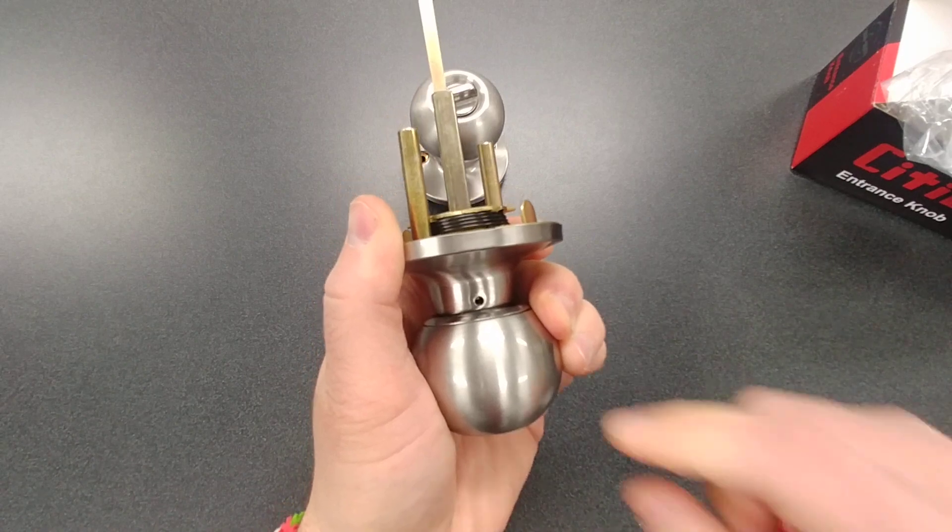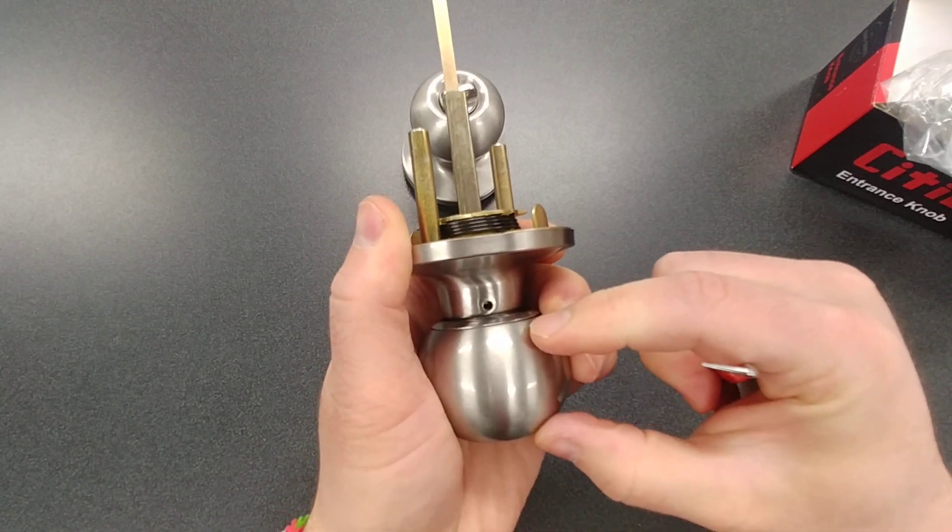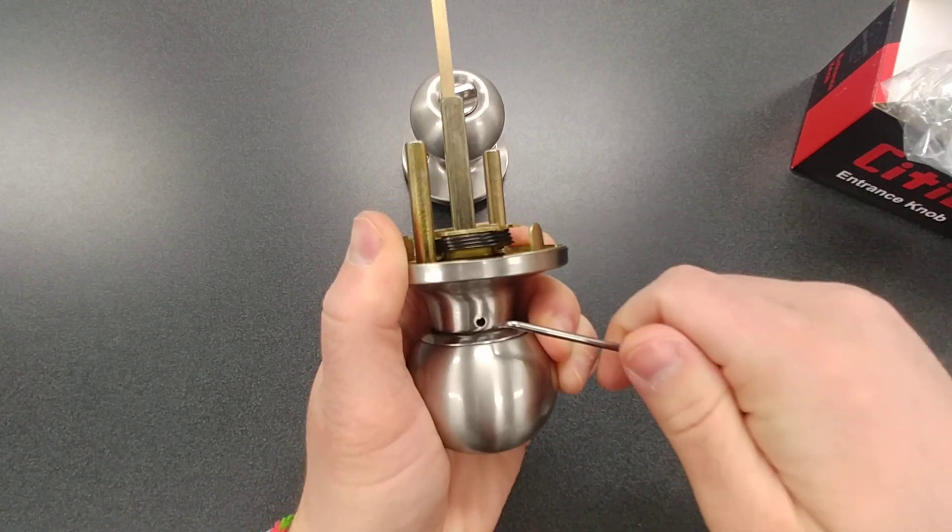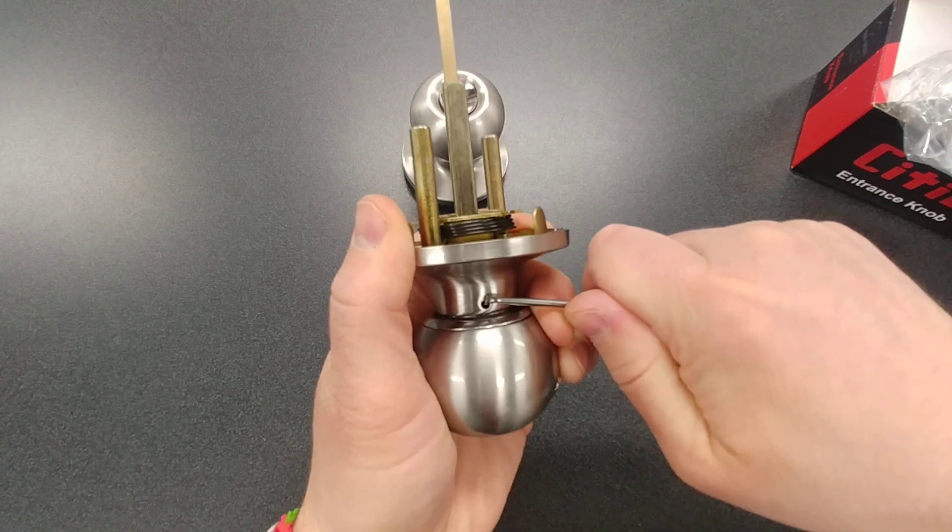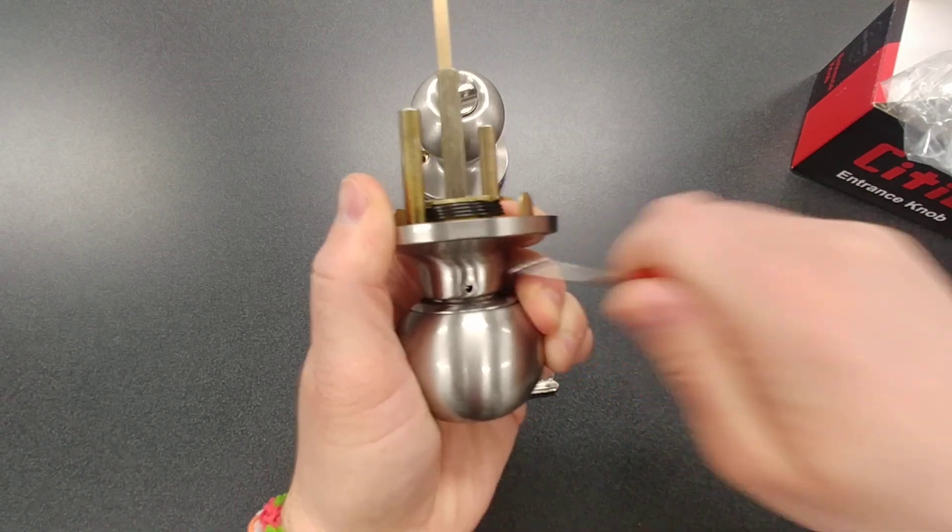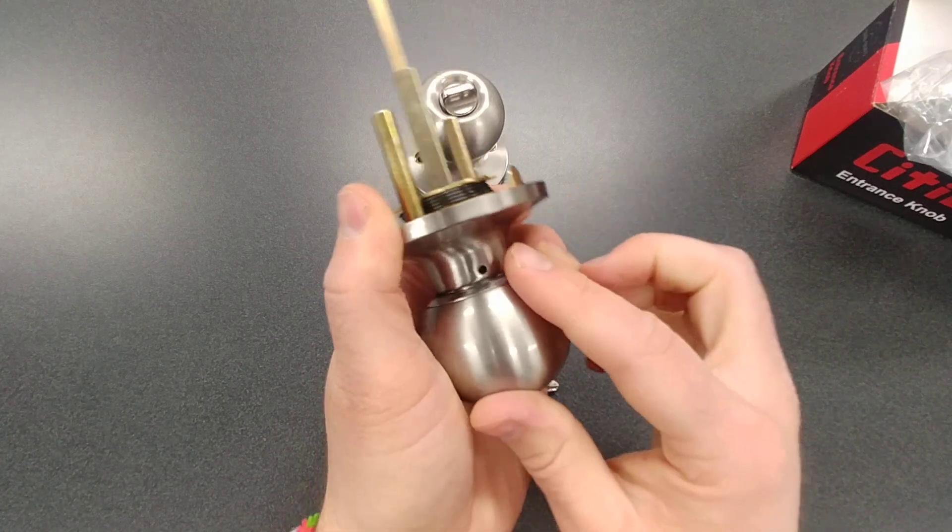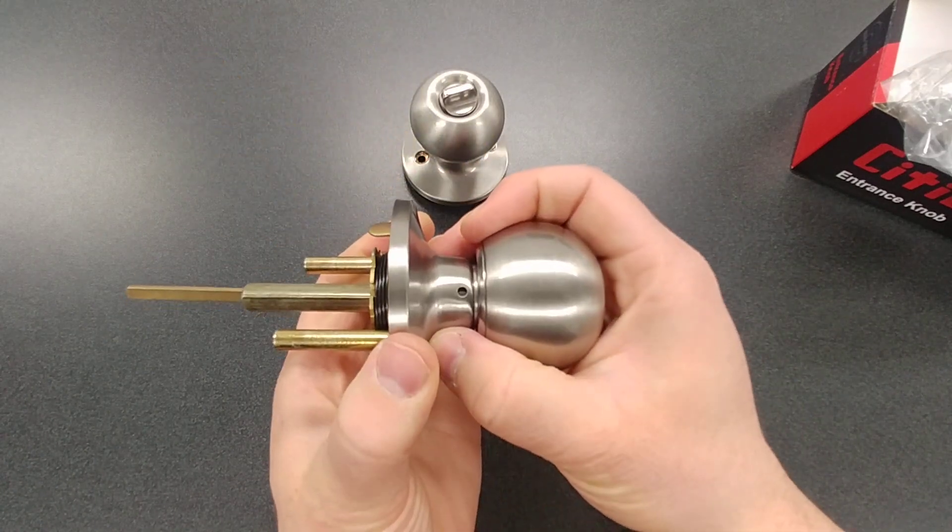Once you can see that pin, you're going to hold the knob in your hand with tension against this, and you're just going to push down. You're going to do like a little push, and that's going to get that pin pushed over, so then at this point, you can start to take off the knob.